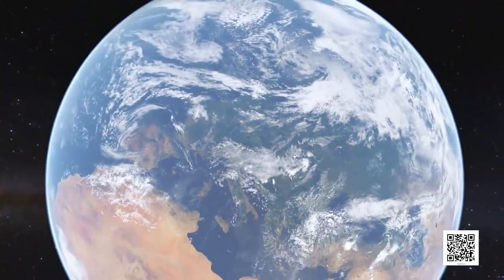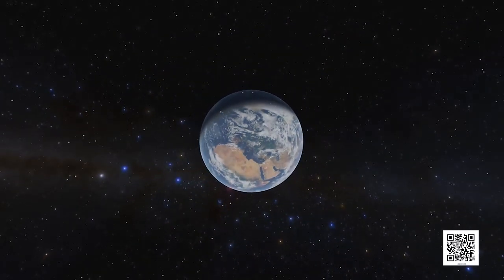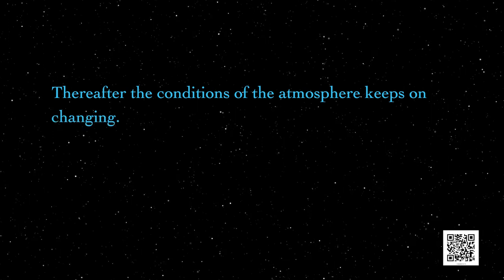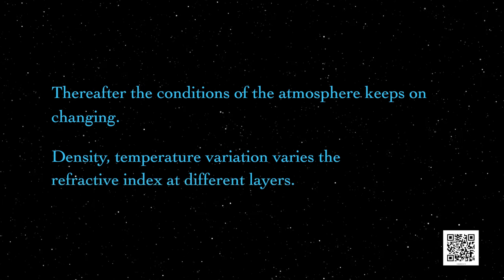Twinkling of stars is a similar phenomenon but on a much larger scale. The twinkling of a star is due to atmospheric refraction of starlight. The starlight on entering the earth's atmosphere bends towards the normal because it enters a denser medium from vacuum. Thereafter, the conditions of the atmosphere keep on changing — density and temperature variation vary the refractive index at different layers.